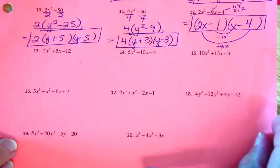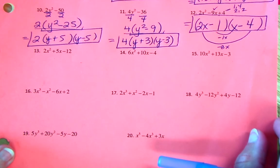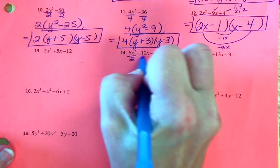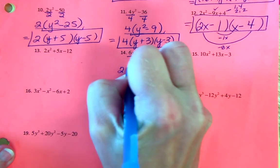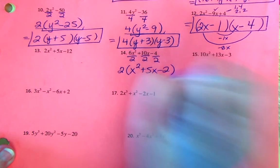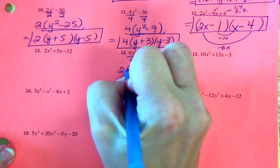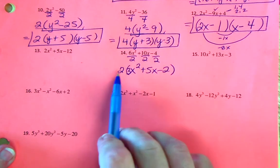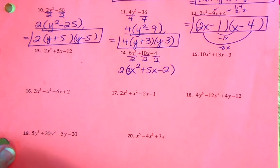Next row — do we have a greatest common factor? We do not in 13, we do in 14, and we do not in 15. In 14, all numbers are even, so we can divide out 2: 2 times (x² + 5x − 3). Let's verify: 2×3 is 6, 2×5 is 10, 2×2 is 4.